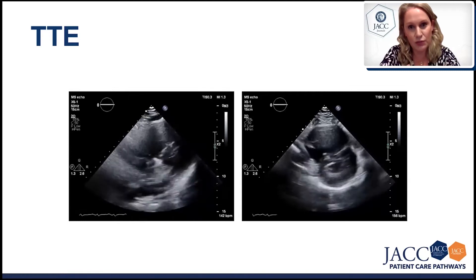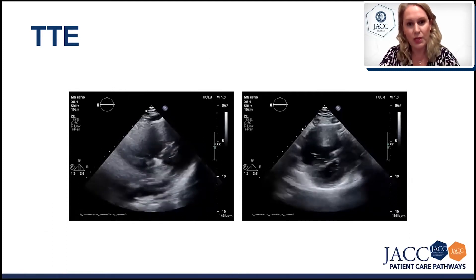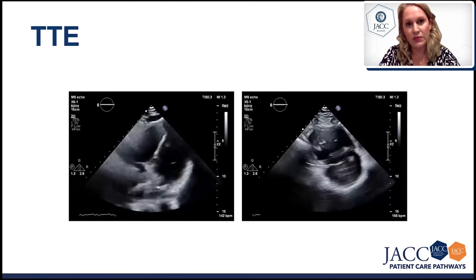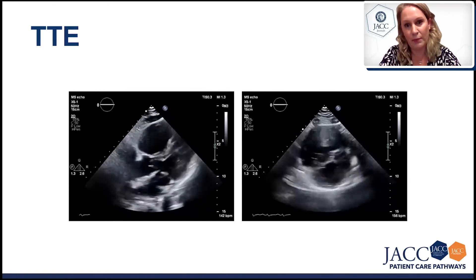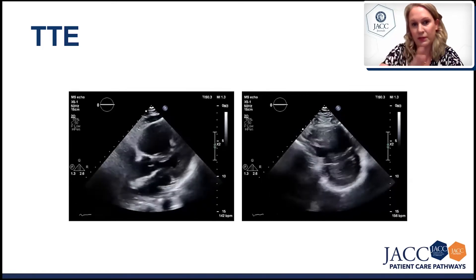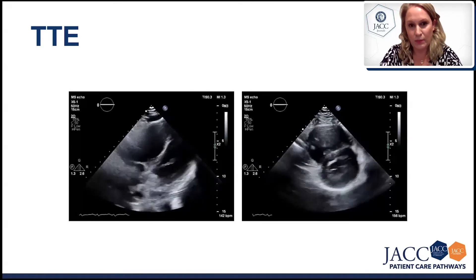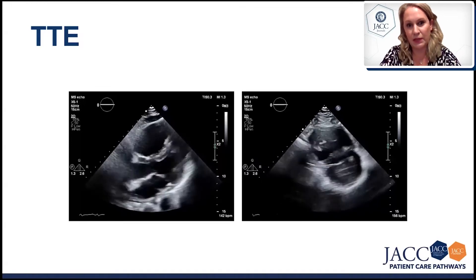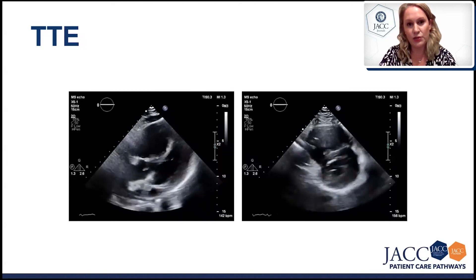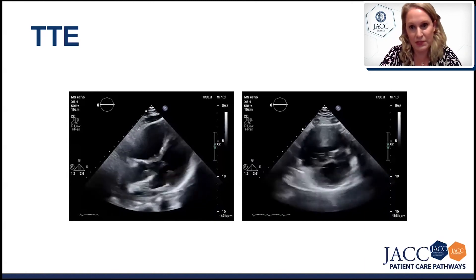We also have significant reduction of RV function — at least moderate to severe RV dysfunction — which is also characteristic of pressure overload. If we could see the RV apex better from the four-apical chamber view, maybe we could see the McConnell sign, which is typical: the right ventricular apex is more vigorous while the rest of the ventricle is stunned and hypokinetic. But let's see what happens next.